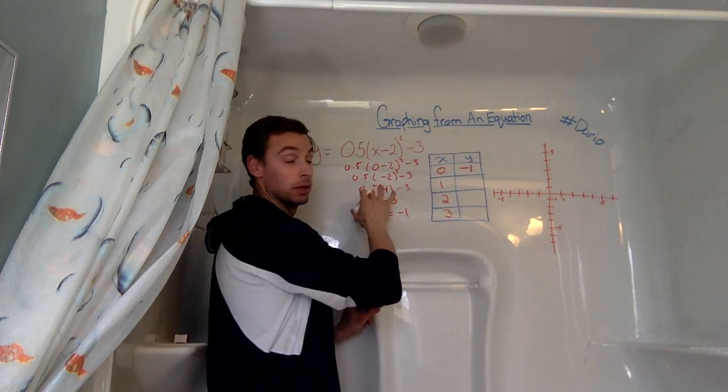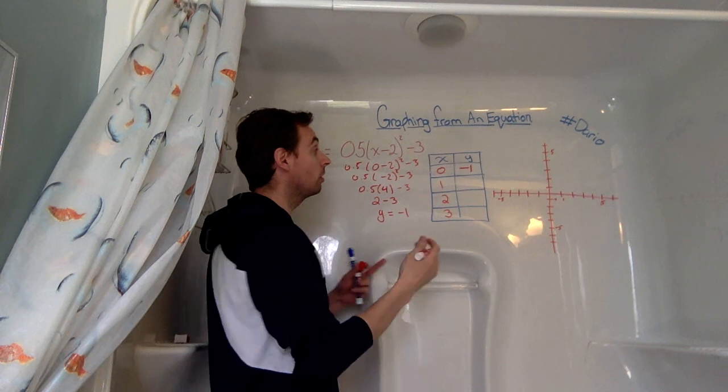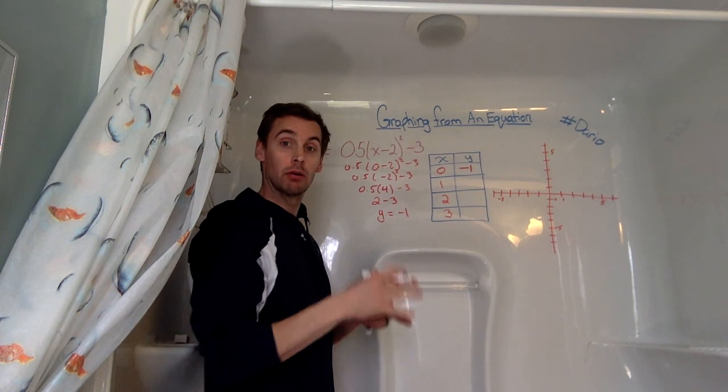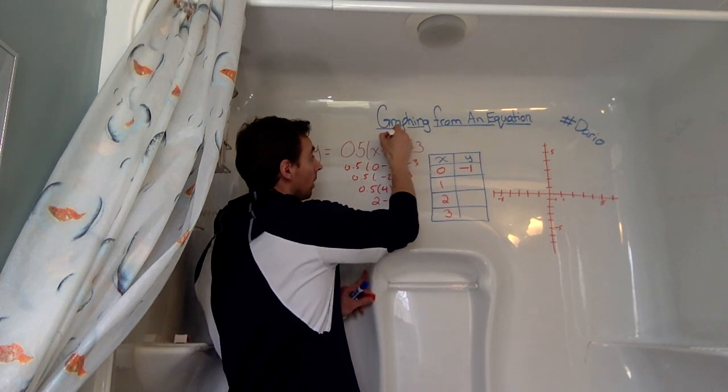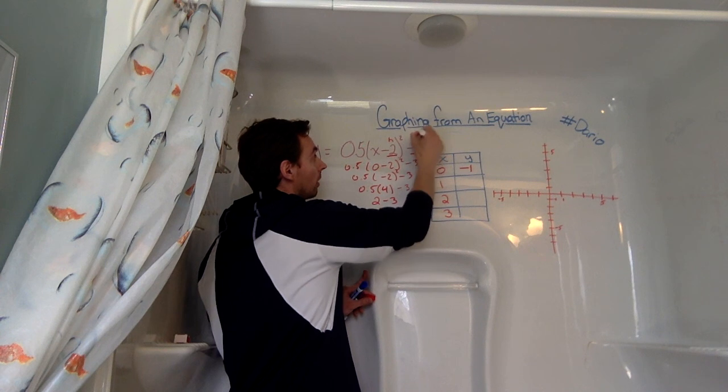Now the good thing about the vertex formula, which is why I haven't done it first, is we already know one point on our graph. If we look here, we have our h value, and we have our k value.